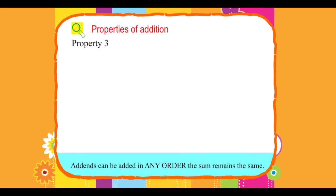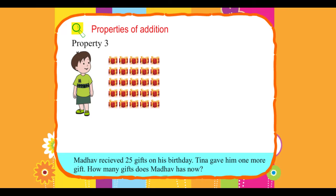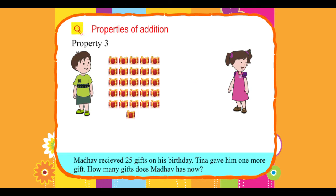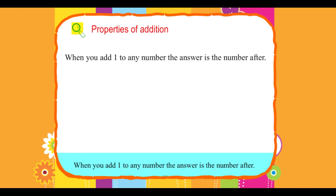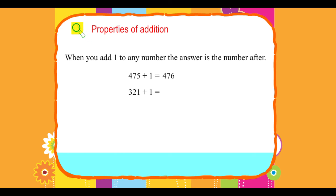Property 3: Madhav received 25 gifts on his birthday. Tina gave him one more gift. How many gifts does Madhav have now? 25 plus 1 equals 26. When you add 1 to any number, the answer is the number after. Example: 475 plus 1 equals 476. 321 plus 1 equals 322.